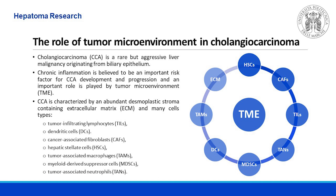Cholangiocarcinoma is characterized by an abundant desmoplastic stroma containing extracellular matrix and many cell types, such as tumor-infiltrating lymphocytes, dendritic cells, cancer-associated fibroblasts, hepatic stellate cells, tumor-associated macrophages, myeloid-derived suppressor cells, and tumor-associated neutrophils.